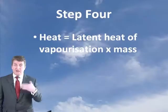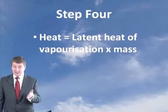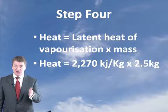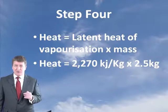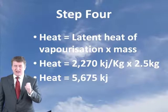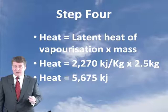Step four: convert the water at its boiling point into steam using the latent heat of vaporisation. The heat equals the latent heat of vaporisation times the mass: 2,270 kilojoules per kilogram × 2.5 = 5,675 kilojoules. This is actually why water should always be used in mist or droplet form — it takes a lot of energy to turn water into steam, making it very efficient, which is why firemen should always try to get it into spray form.